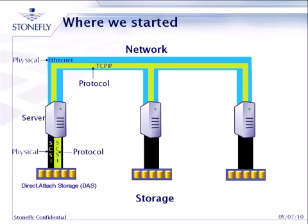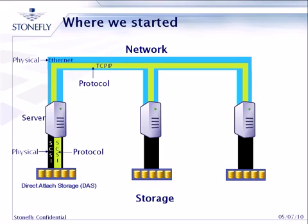I'll start with the standard where we started. A long time ago, we basically had a server connected with a network. If you look at the top side, there is a physical connection between the servers, and the protocol that networking communicates with was TCP/IP and still is — using Ethernet as the physical interface and TCP/IP at the protocol level. And people used to use direct attached storage, DAS. That physical interface to storage was SCSI — the physical cables — and the protocol was SCSI also. So the direct attached storage was connected to the servers directly, and each server had its own storage.